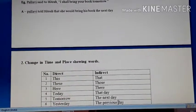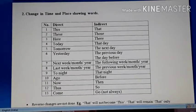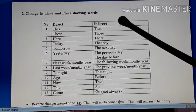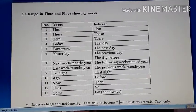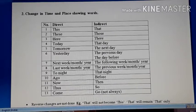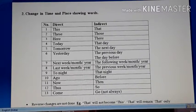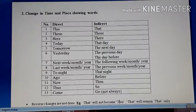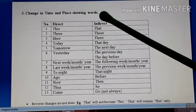Moving forward, the second type of changes are the changes in time and place showing words. All of these you are supposed to mug up and learn by heart. Because in indirect speech, anywhere you make a mistake, the entire sentence is wrong. You will not get any marks — half marks are not given. In indirect speech and in transformation also, if you are wrong, you lose the complete marks.